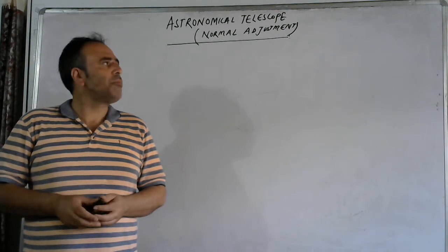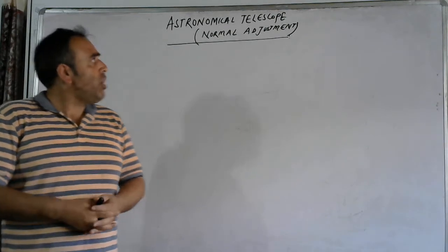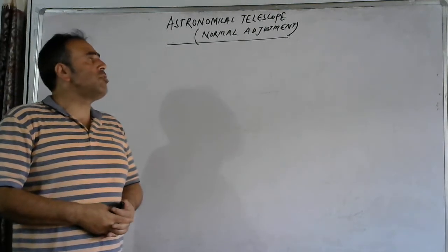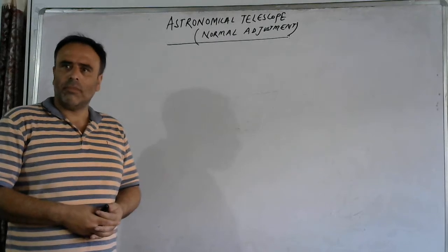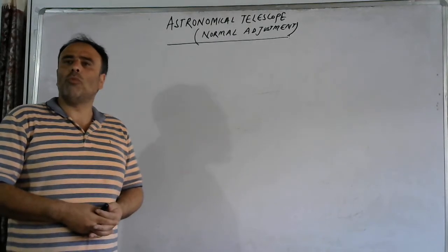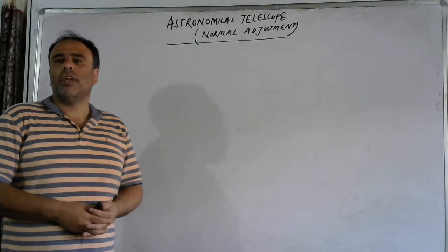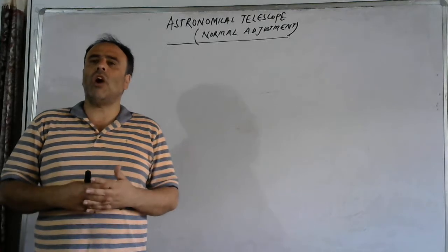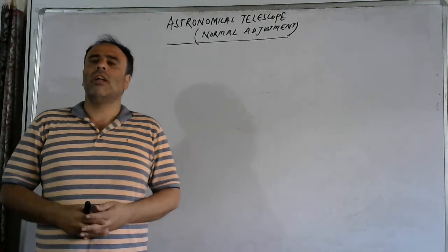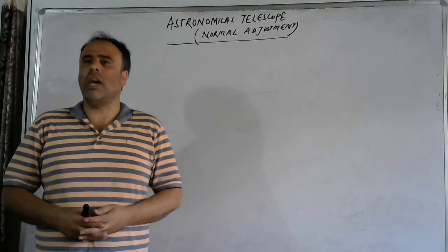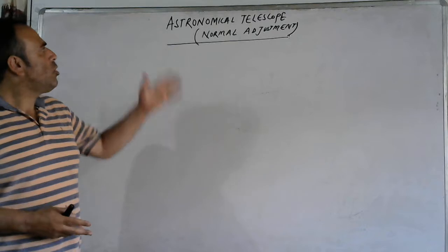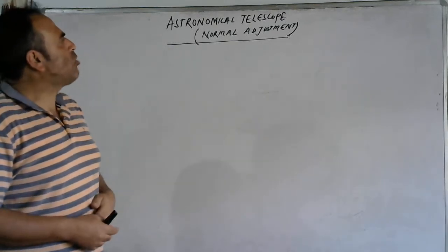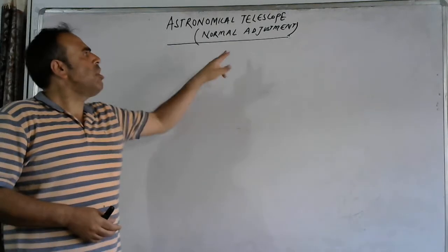Welcome to today's lecture. Today we will discuss the astronomical telescope in its normal adjustment. Previously, we read about the astronomical telescope in distinct vision adjustment, where the final image was formed at the least distance of distinct vision from the eye. Now, today we are going to discuss the same astronomical telescope but in normal adjustment.